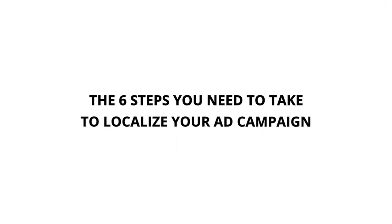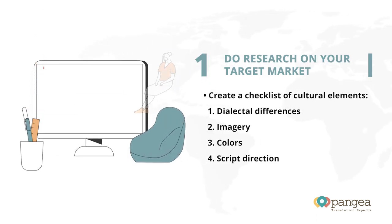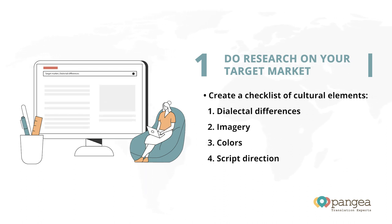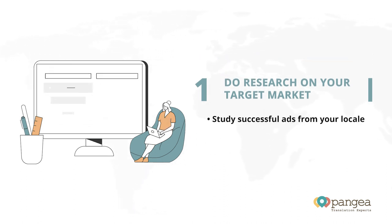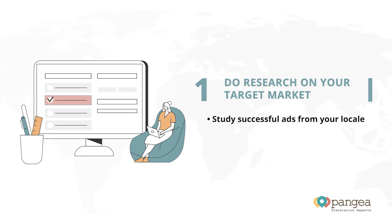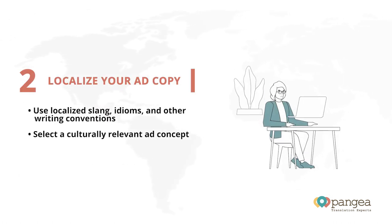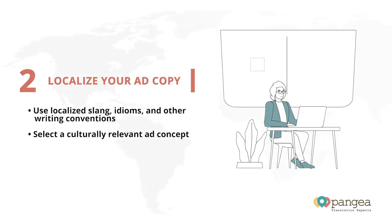The six steps you need to take to localize your ad campaign. First step: do your research. Create a checklist of dialectal differences, imagery, colors, and other elements, since those tend to differ from culture to culture. To help you with this step, try studying successful ads from your target locale.